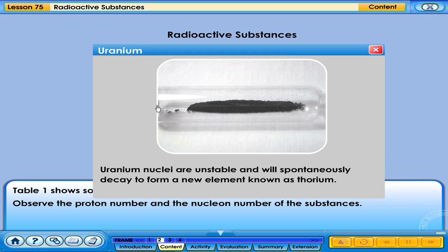Uranium nuclei are unstable and will spontaneously decay to form a new element known as thorium.